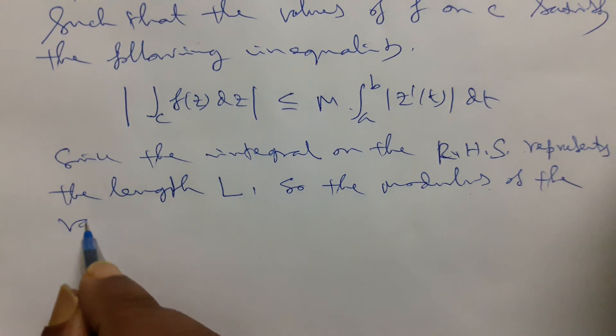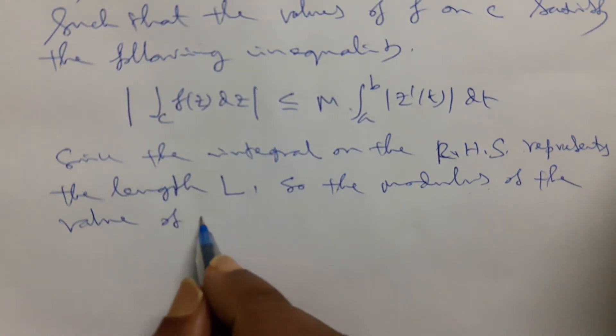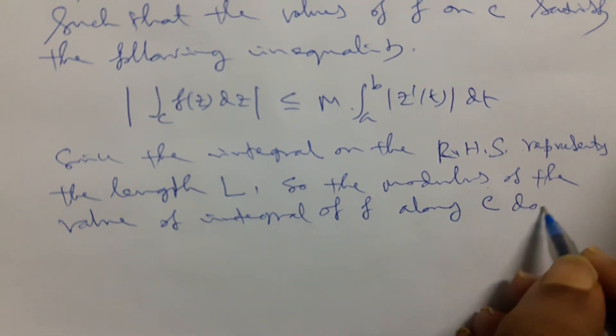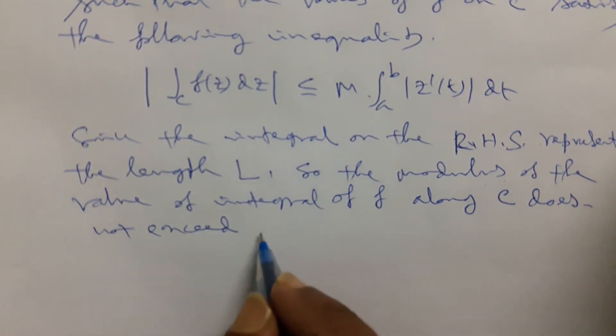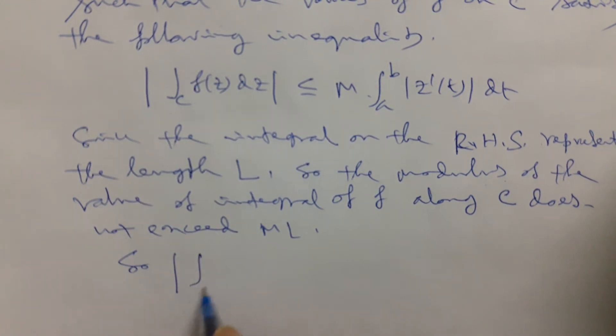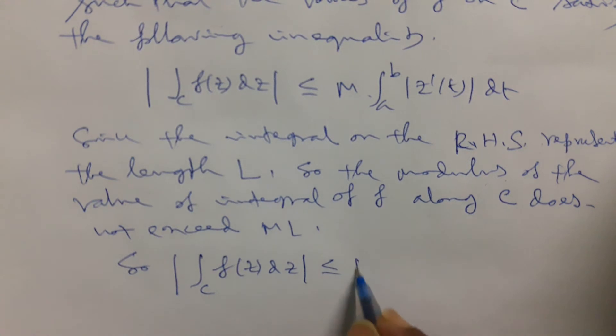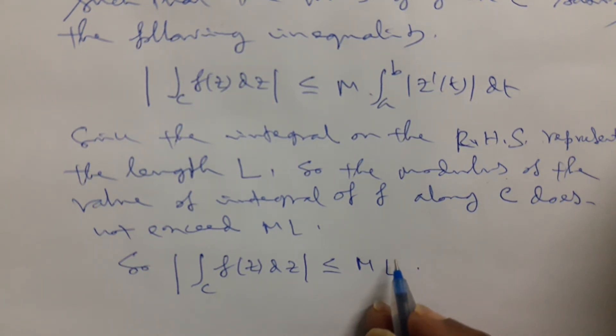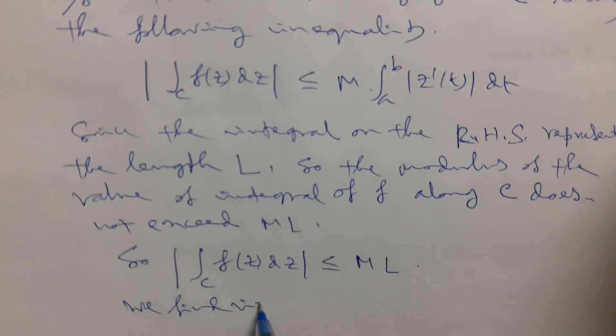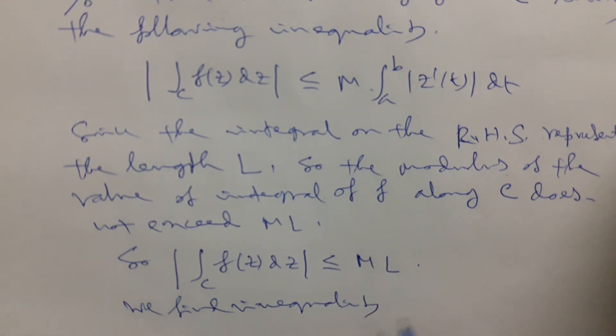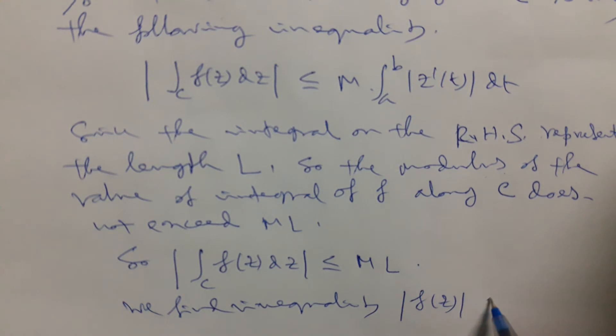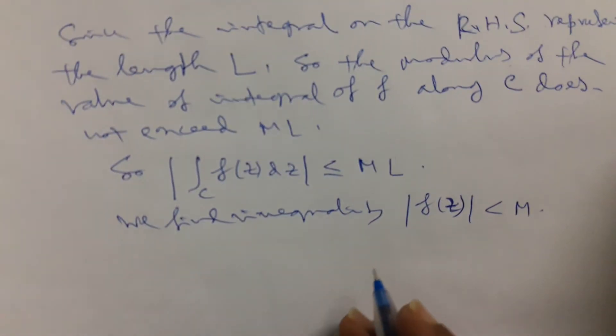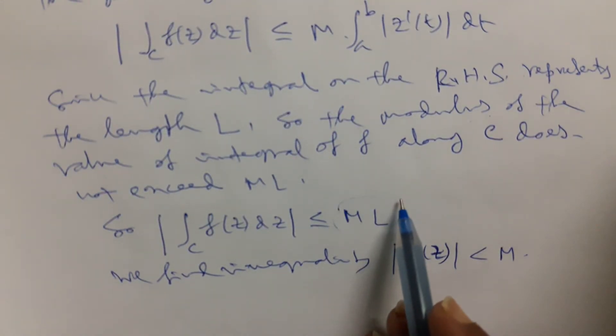So the modulus of the value of integral of f along the contour C does not exceed mL. So the modulus of contour over C of f(z)dz will be less than or equals to mL. And the strict inequality is when we find that modulus of f(z) is simply less than m.